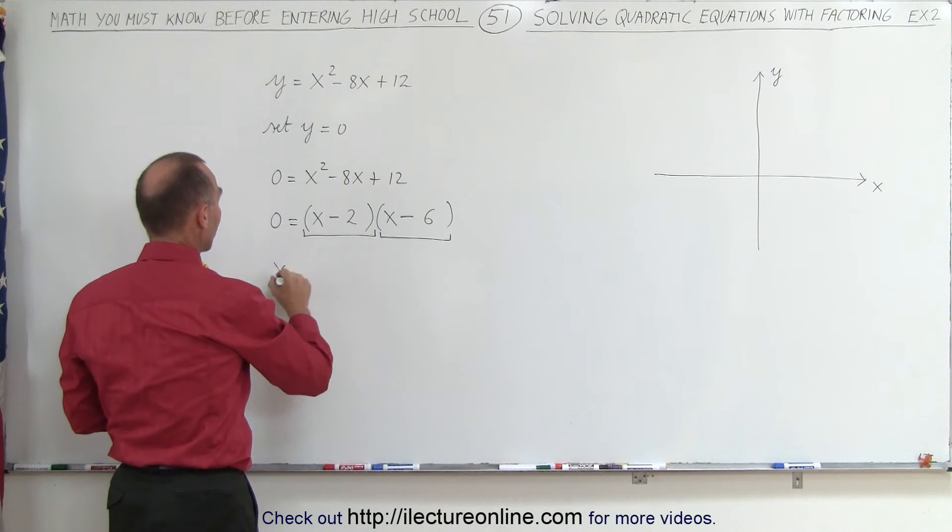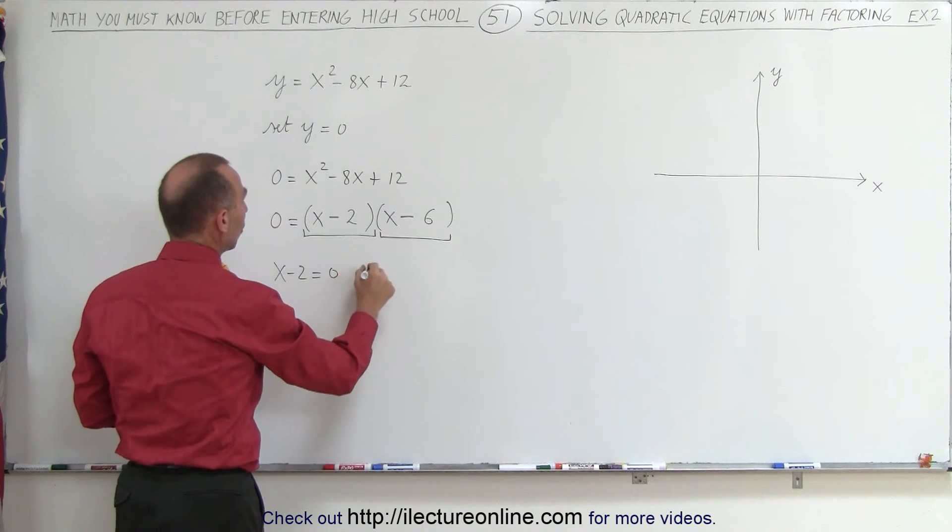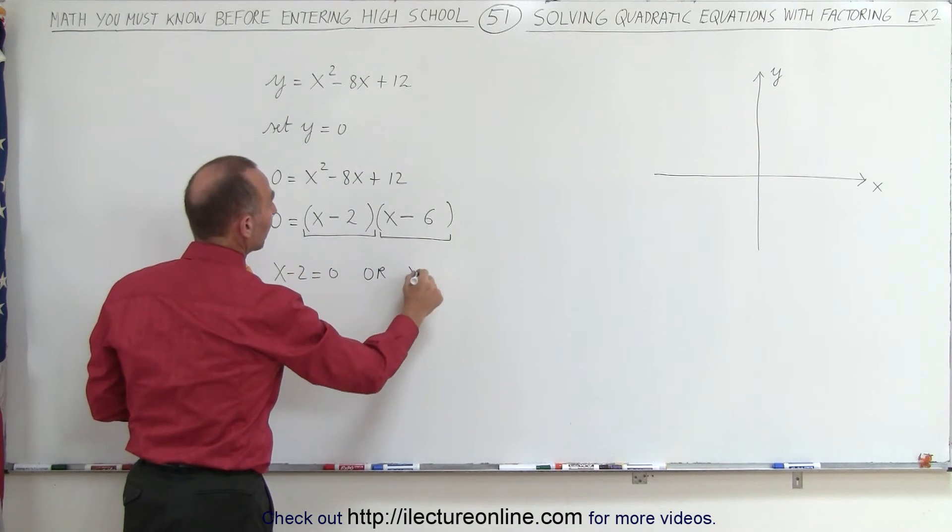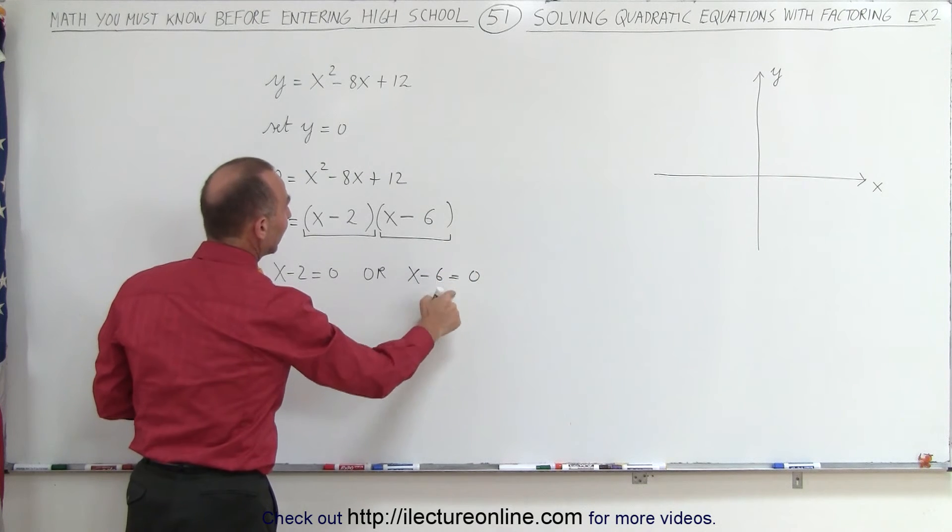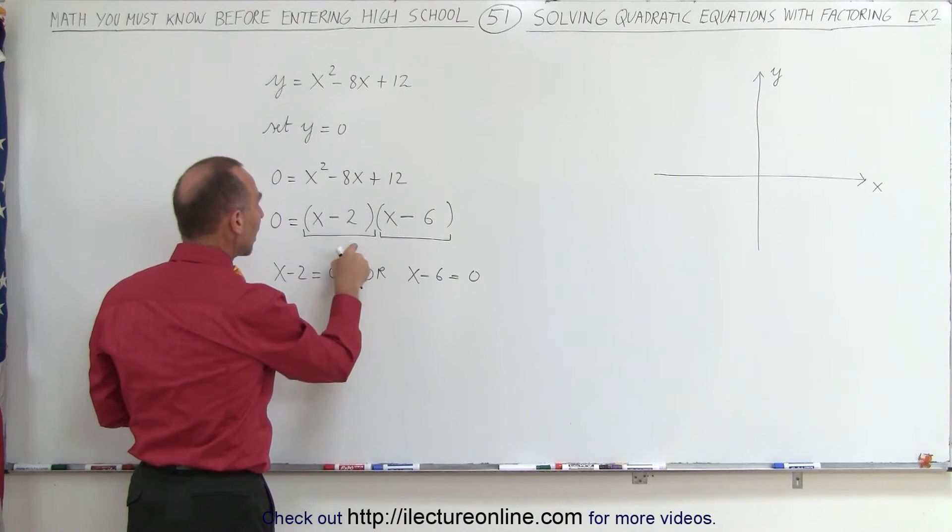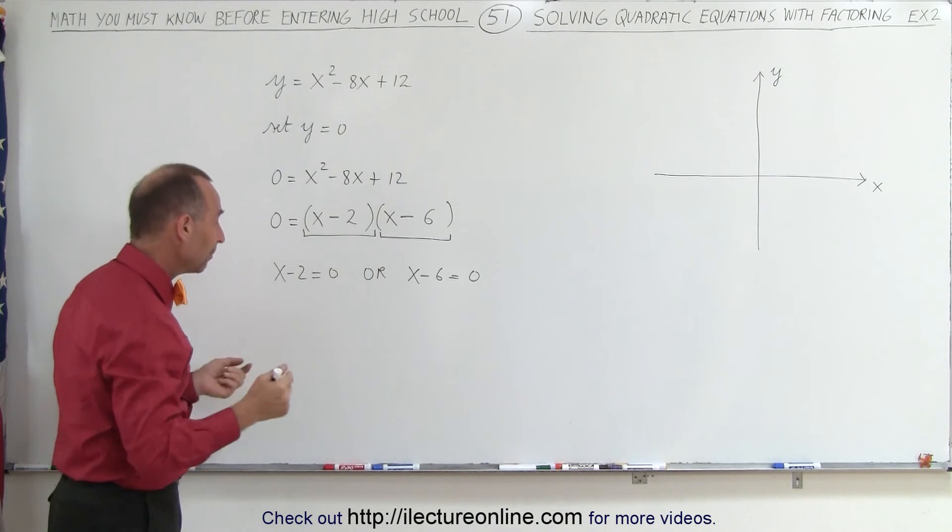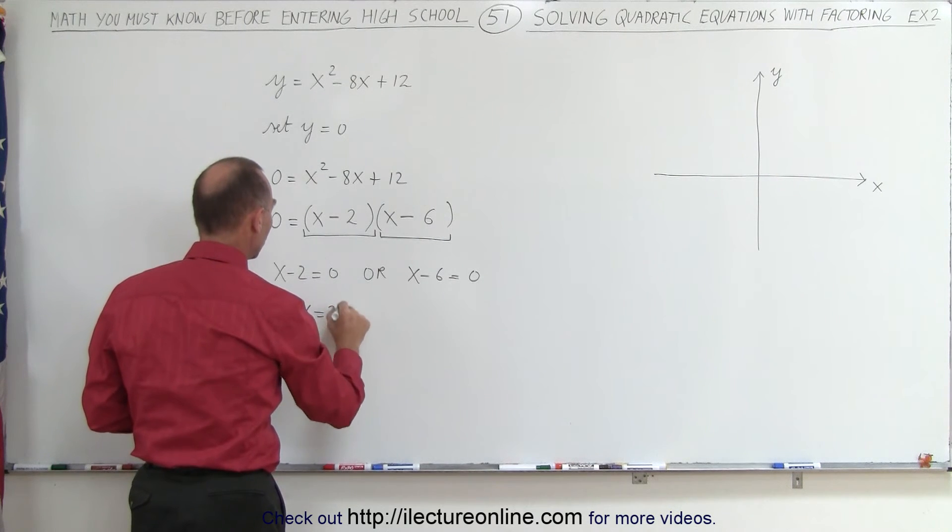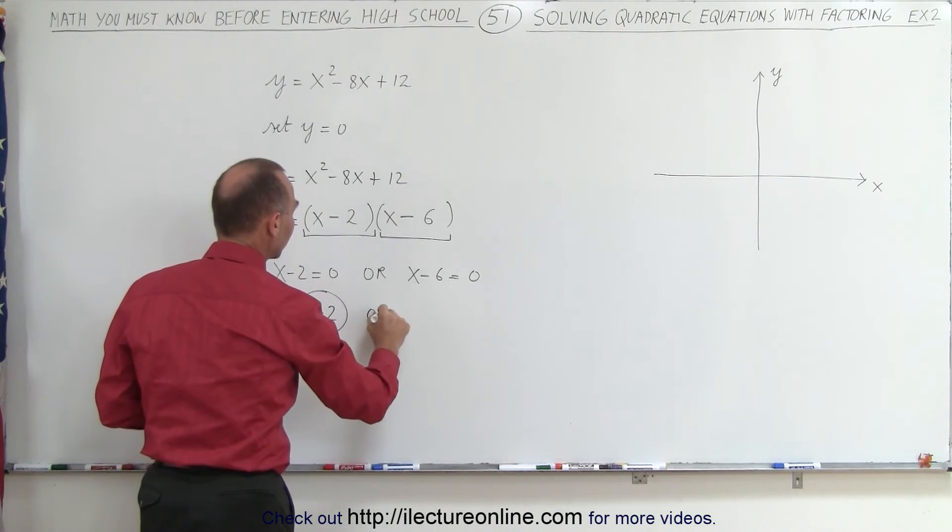That means that x minus 2 is equal to 0, or that x minus 6 is equal to 0. Either one of these will allow the product to be equal to 0. That means that in this case, x must be equal to 2, or in this case, x must be equal to 6.